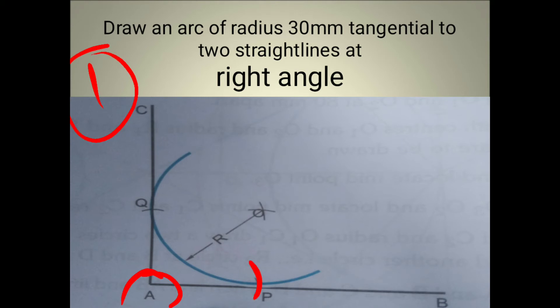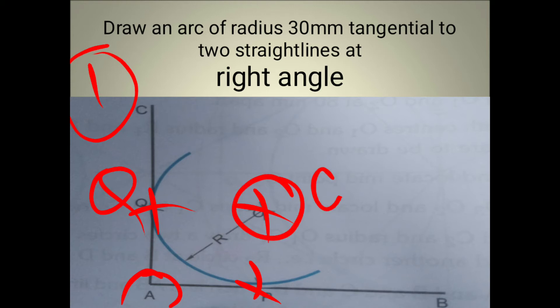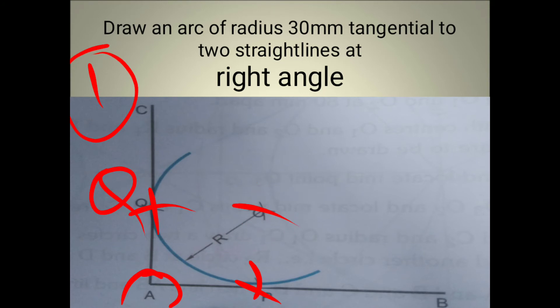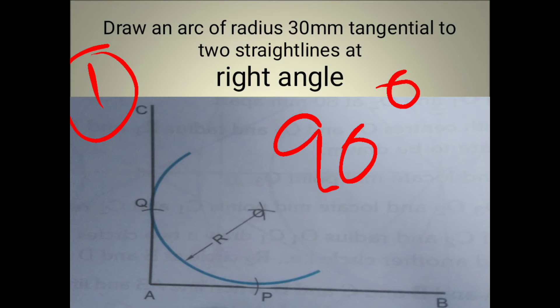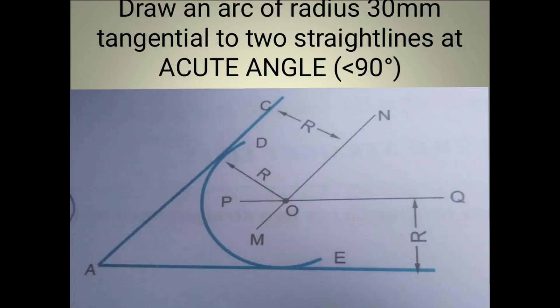To recap: initially, two straight lines have 90 degrees. At point O, draw an arc on straight line one — point P — and similarly point Q, radius equal to 30 mm. Then with P as center draw an arc of radius 30 mm, and similarly with Q as center draw an arc of radius 30 mm. Their intersection gives point O1. With center O1, draw an arc of radius 30 mm. This completes Model Number One — right angle, 90 degrees.